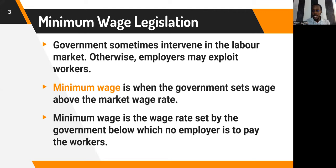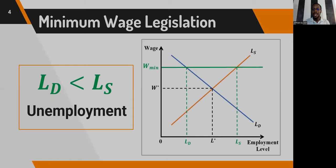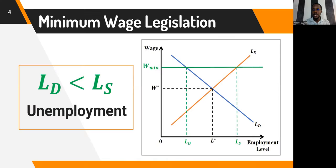Minimum wage is when the government sets the wage above the equilibrium wage rate. It is that wage set by the government below which no employer is supposed to pay their workers. If you recall this diagram on the screen, we have the minimum wage shown in green ink, with a line that cuts across the labor demand curve and the labor supply curve.